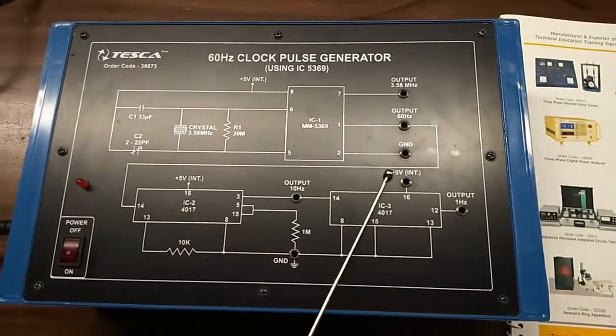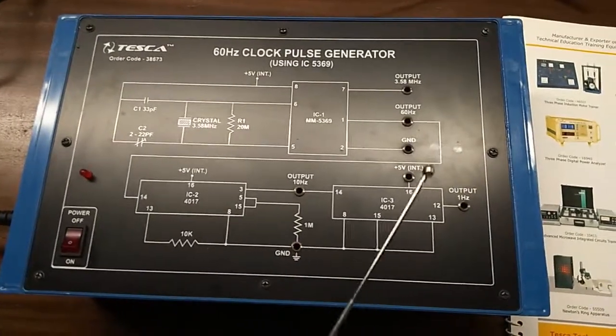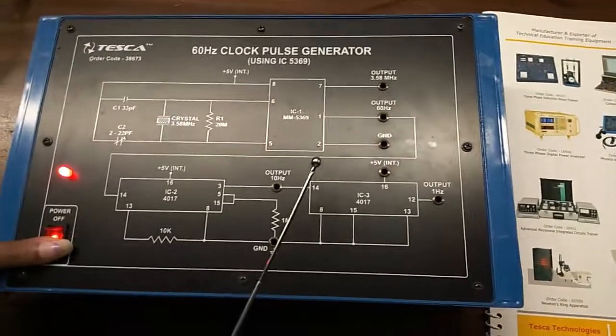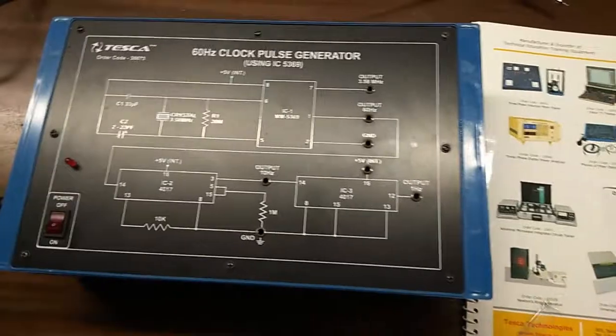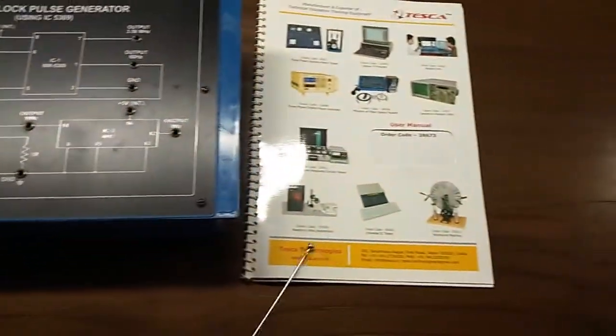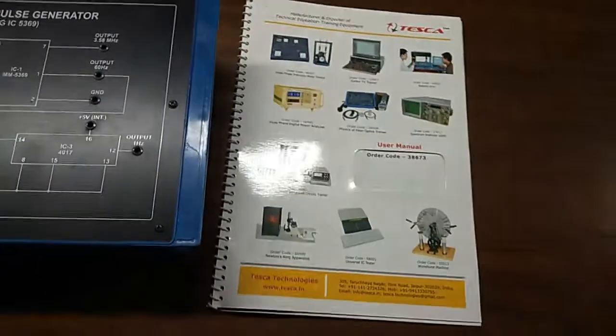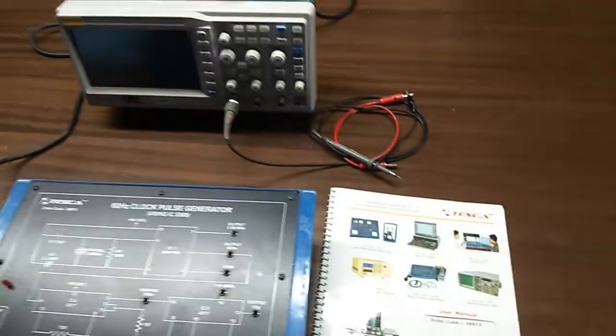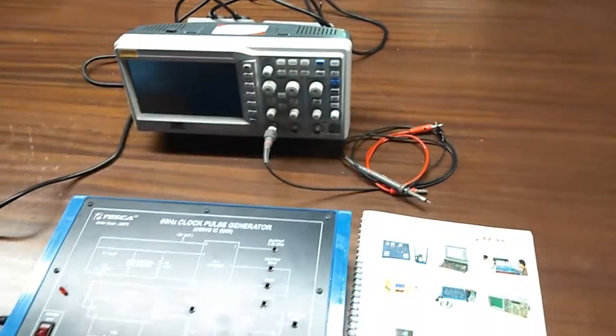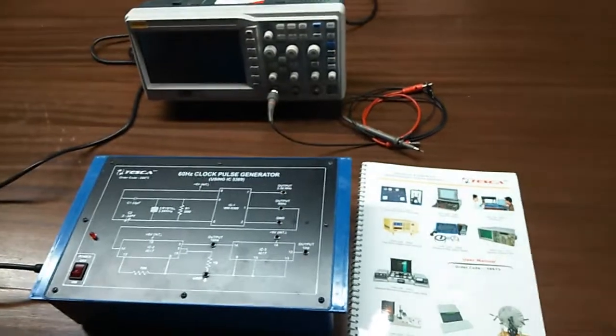This is plus 5 volt inbuilt power supply and this is the main switch to turn on or off the kit. This is user manual which is included in this kit. To do this experiment, we will need a DSO to see the output waveforms and observe the frequency.